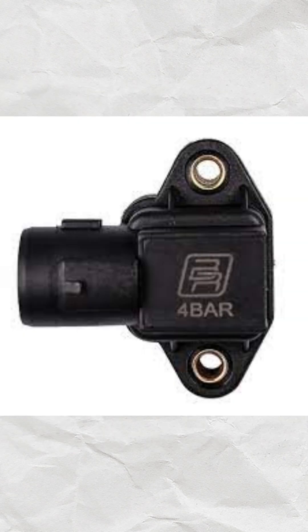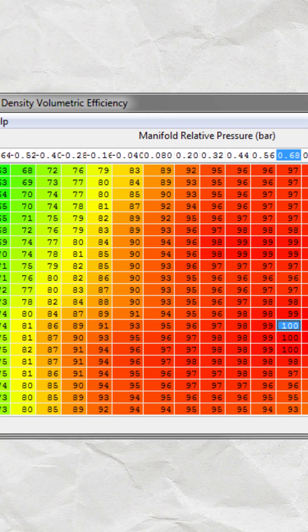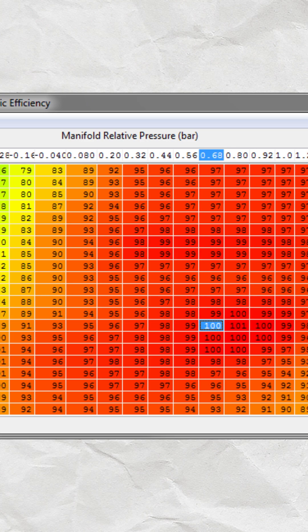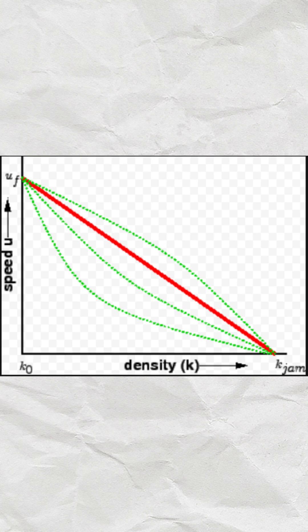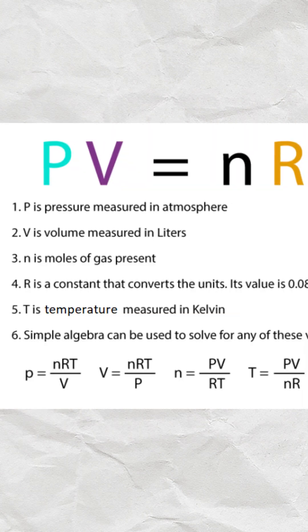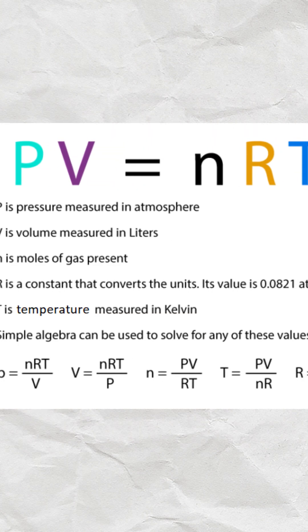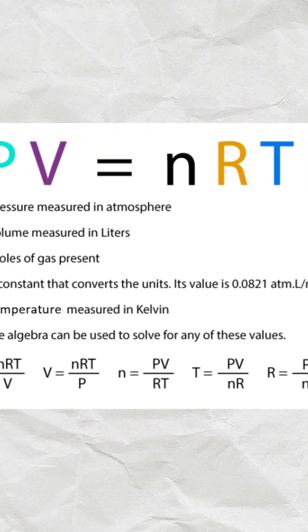Speed density takes that measurement and uses a number of lookup tables and graphs to further calculate the flow and proper mixture by using the ideal gas law. MAF, however, can calculate that immediately because the air is flowing directly into the sensor.